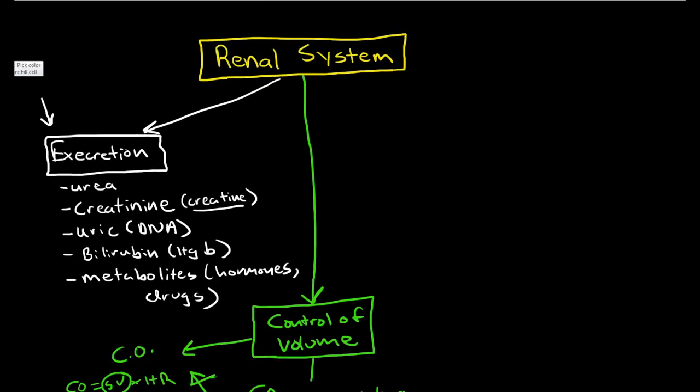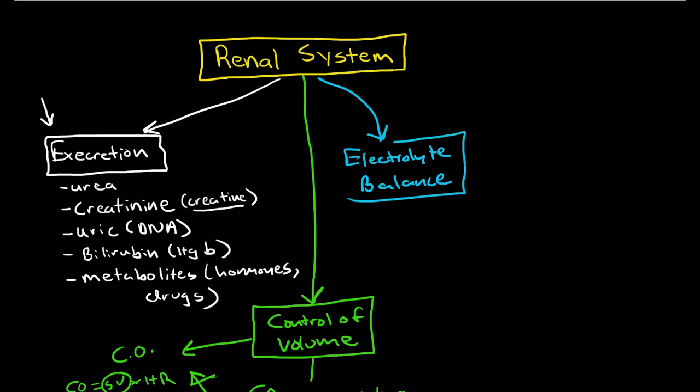Now another important role is the regulation of electrolyte balance. The kidneys play the central role in providing tight control over the balance of sodium and potassium, chloride and phosphorus, and other electrolytes in the body. It does this by selectively excreting or reabsorbing these electrolytes to maintain homeostasis.